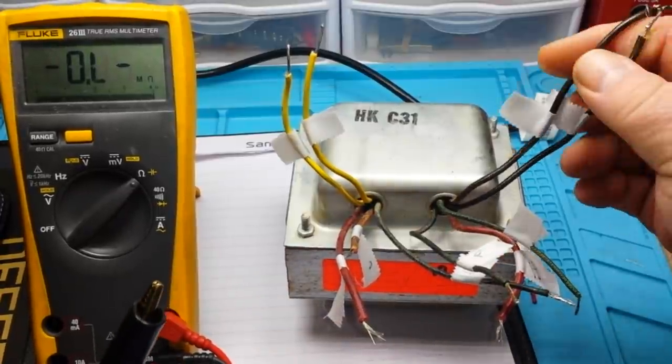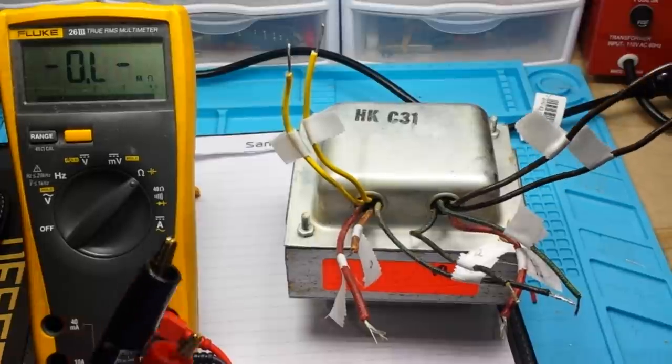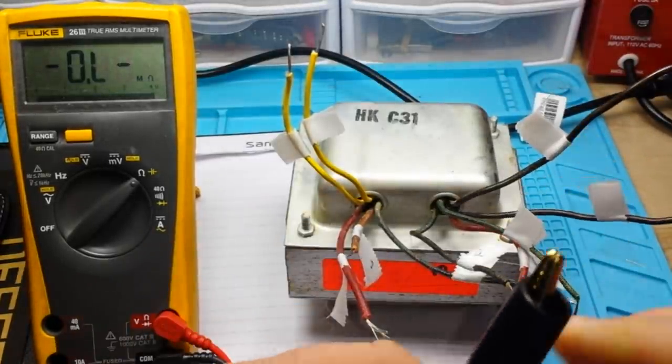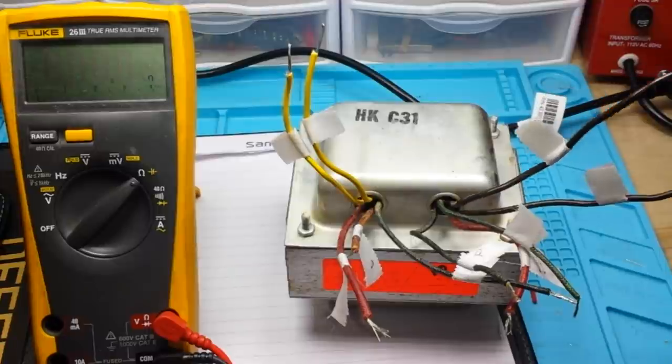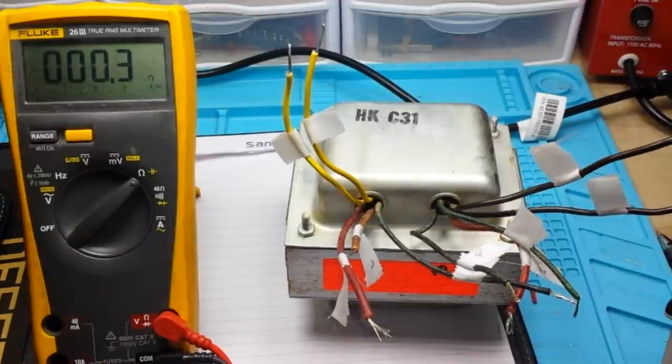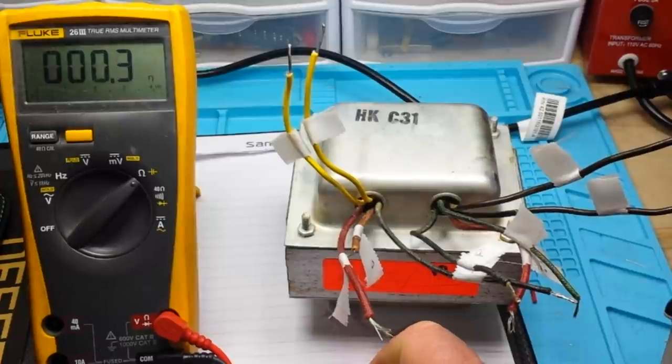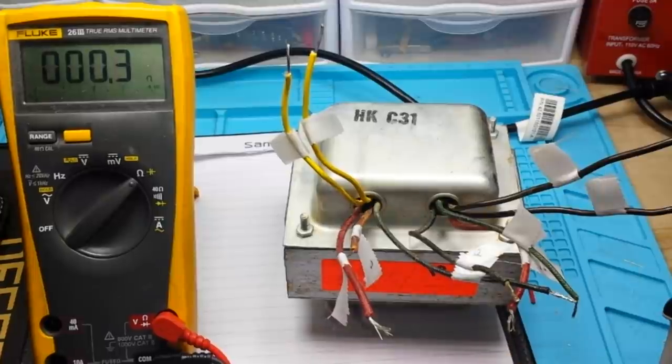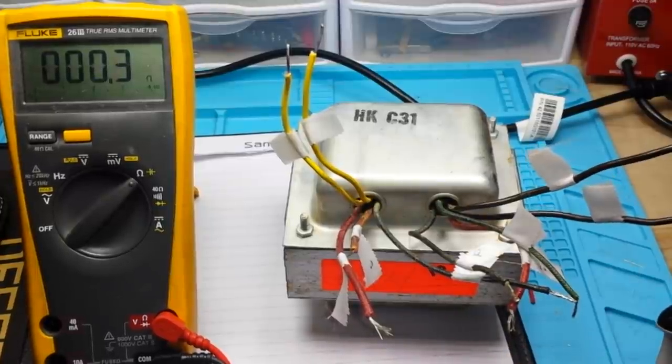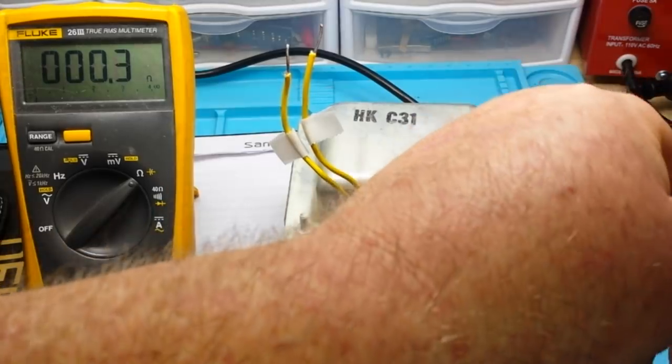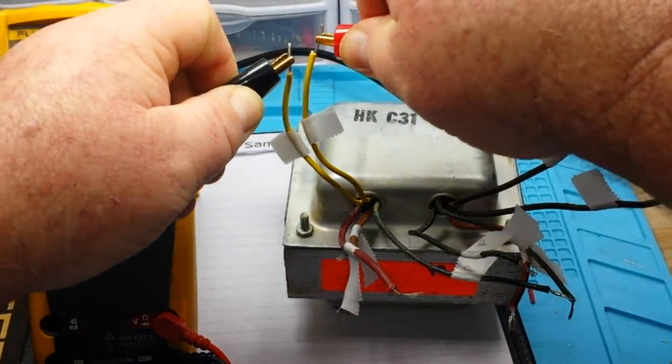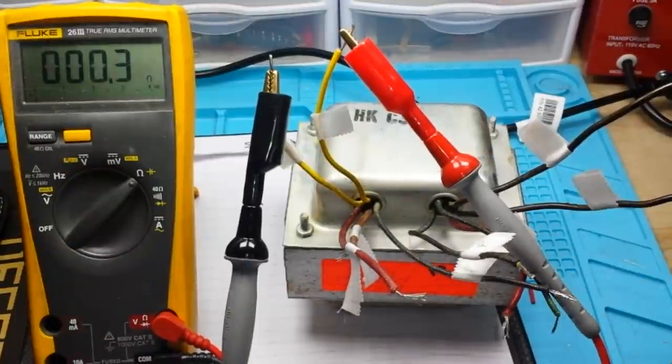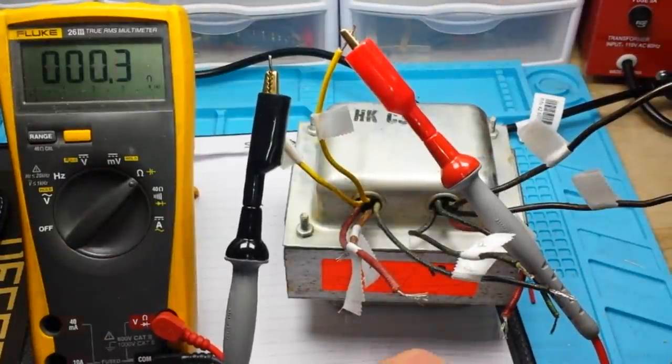That leaves us with this set of heavy duty black wires, which are probably a filament winding because they're going to carry a little bit of current, so they put heavier wires. 0.3 ohms. We'll call this the HD black. And then we also have the yellow wires, which read about the same. So they're probably also a filament winding.